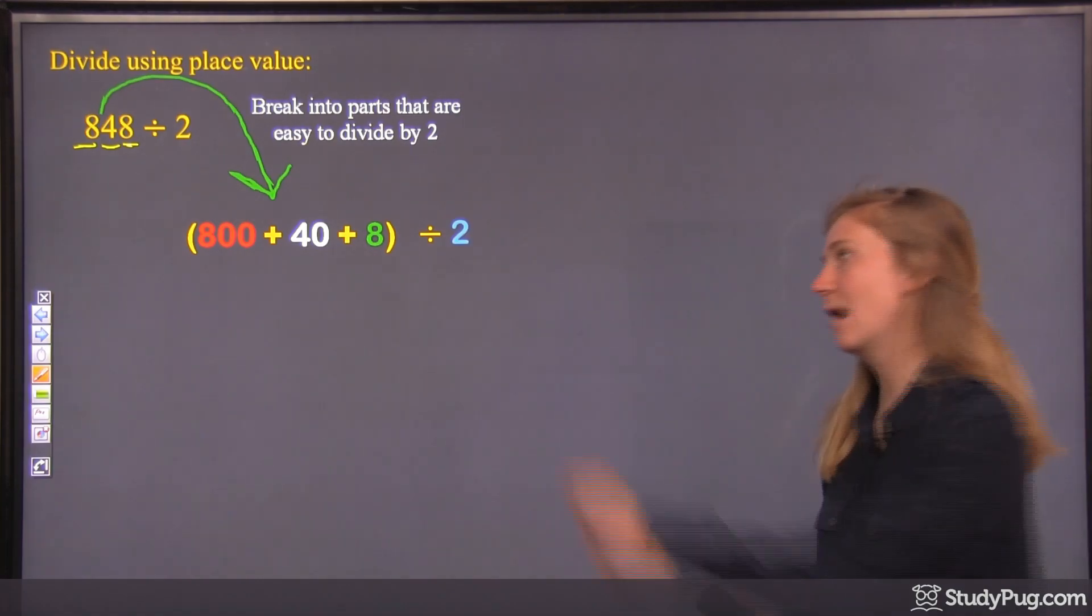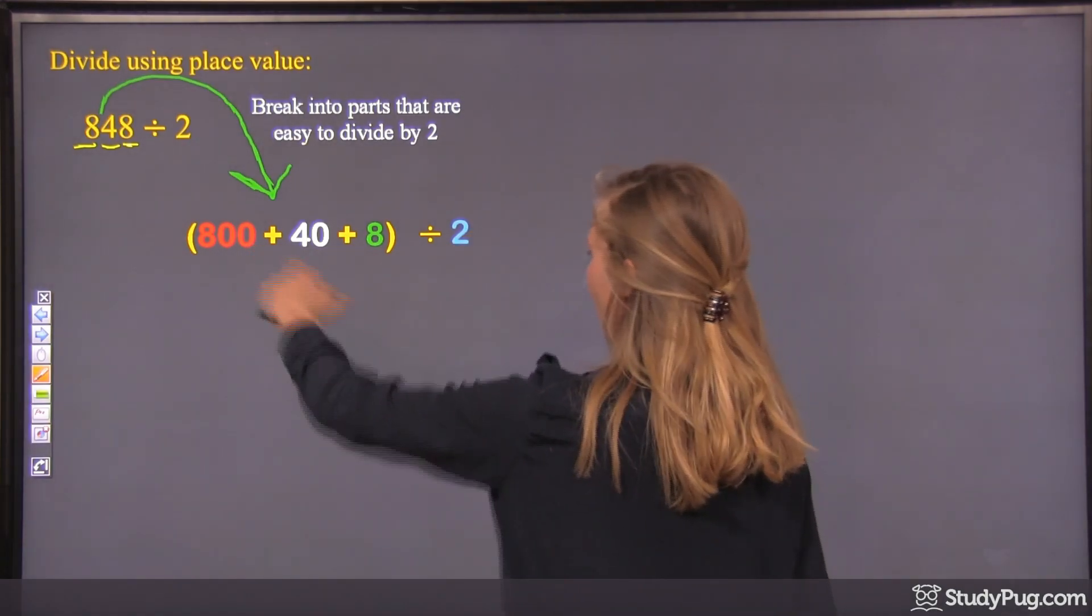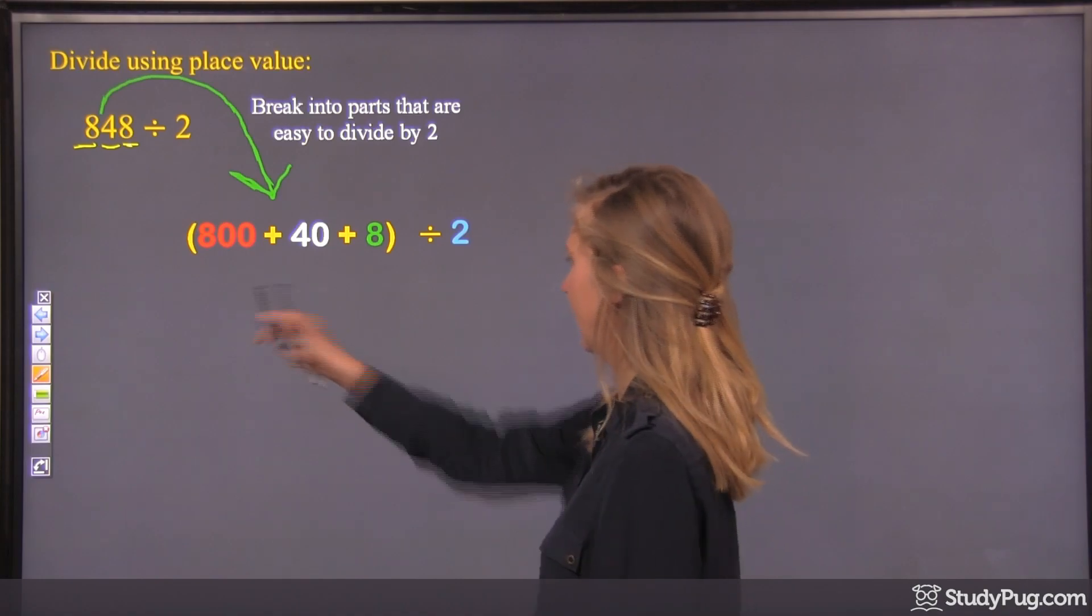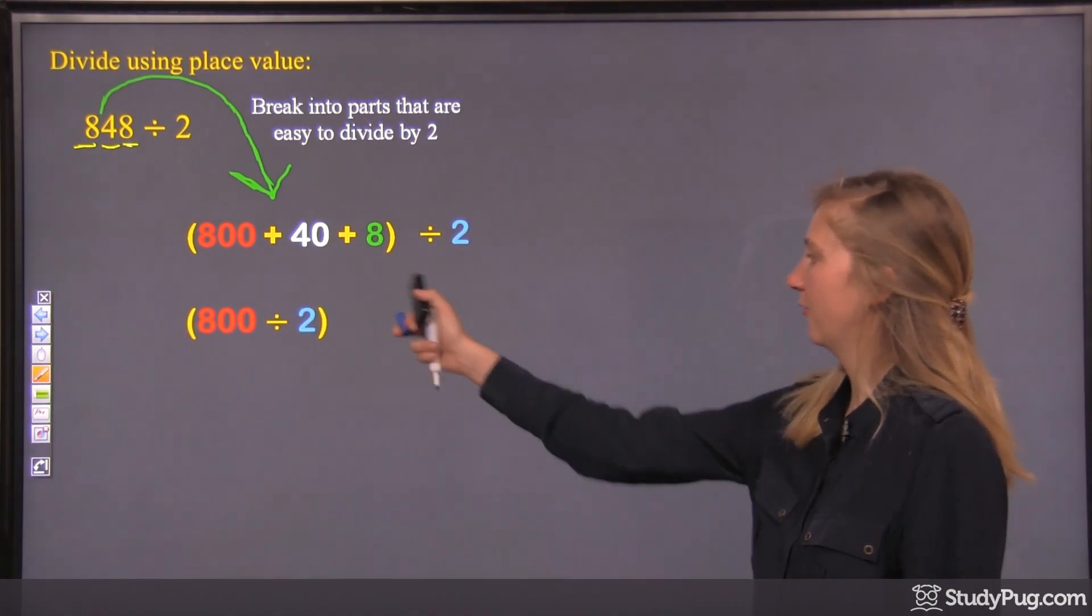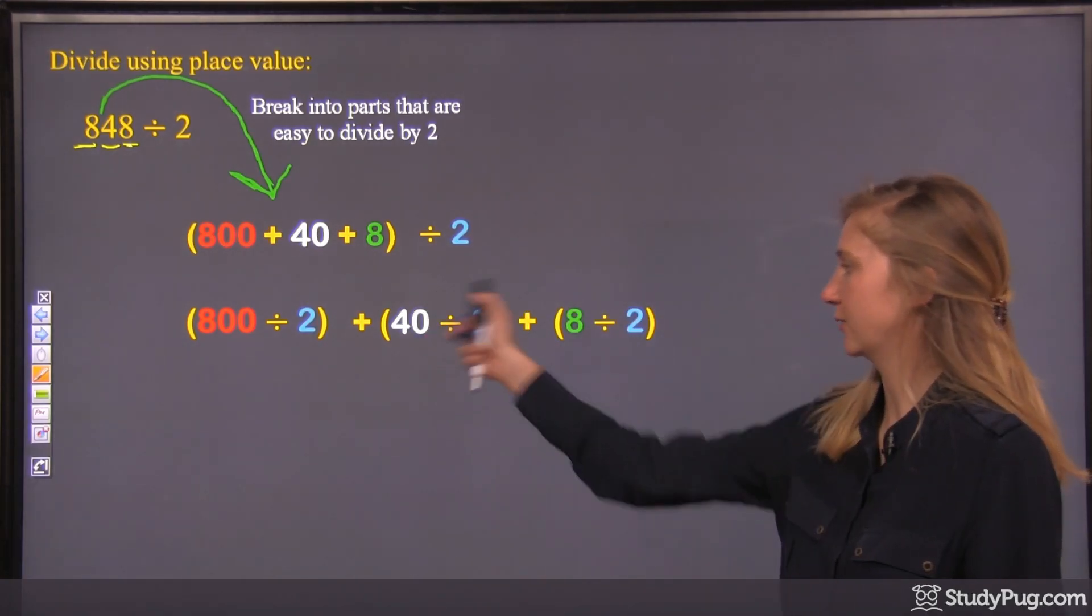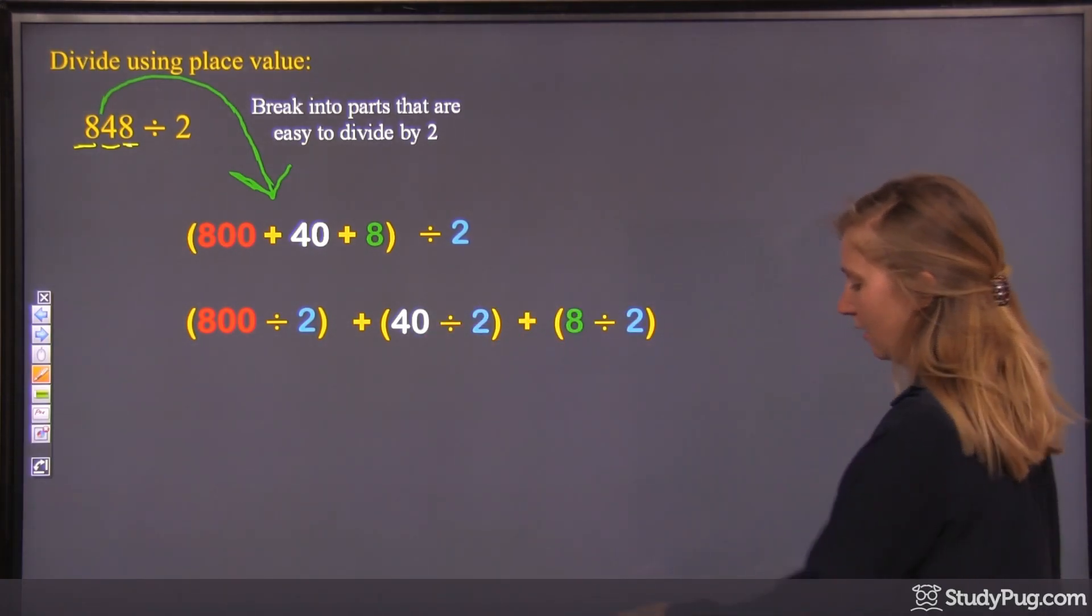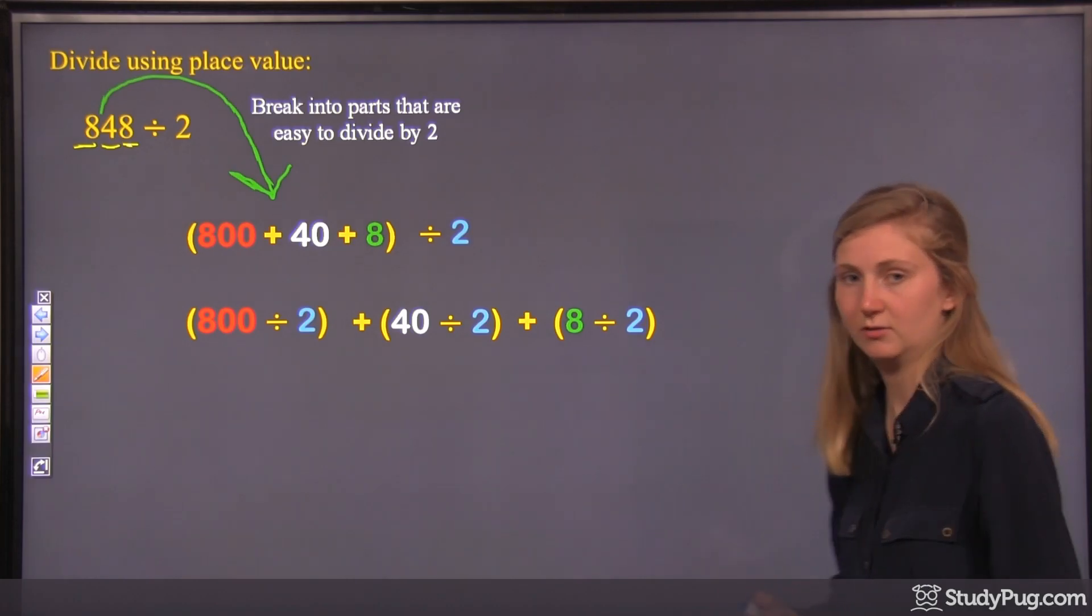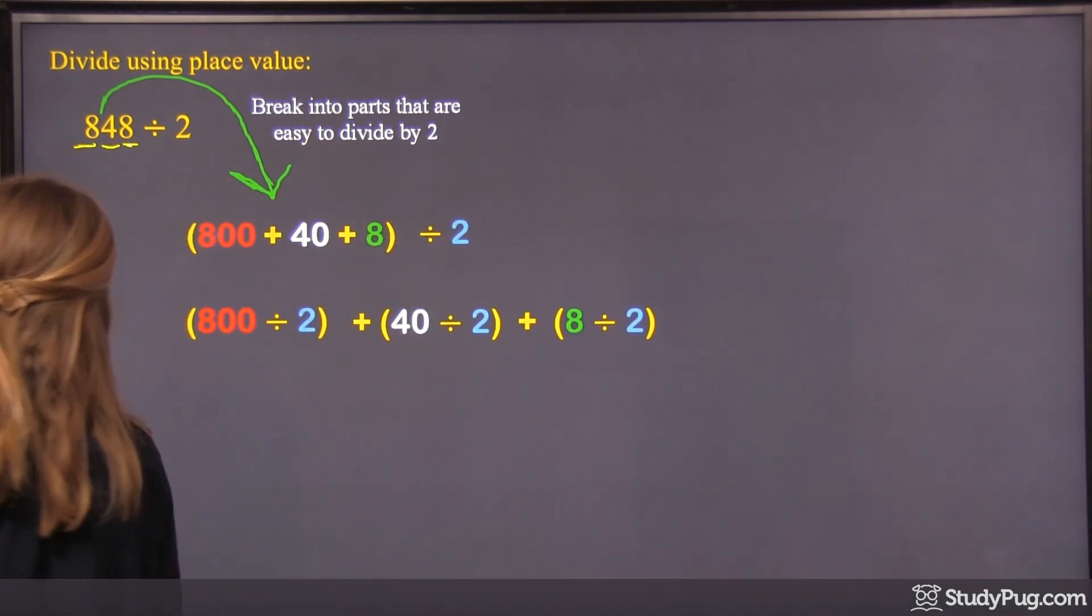Now we're going to divide all the numbers in here by 2. So 800 gets divided by 2, 40 gets divided by 2, and 8 gets divided by 2. And those are added together. So let's do these divisions. Now we've made our easier set for ourselves.